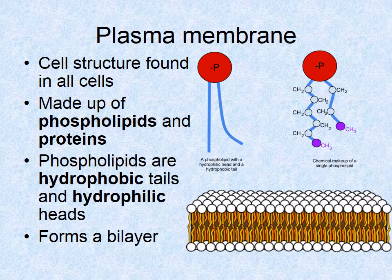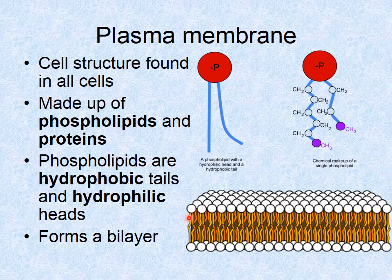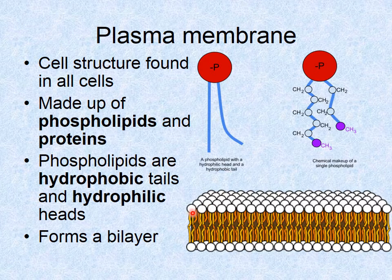We've learned about the plasma membrane in our last lab when talking about cells and the organelles that are in eukaryotic cells. The plasma membrane is basically this phospholipid boundary around the cell. It is a structure found in all cells, both eukaryotic and prokaryotic. This picture below is just showing the phospholipids, not the proteins that are also found in the plasma membrane.